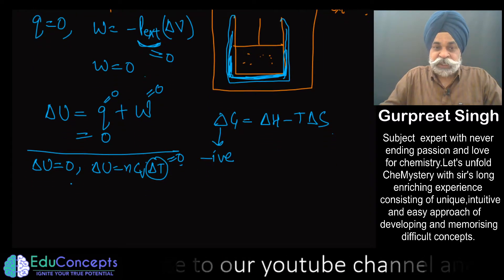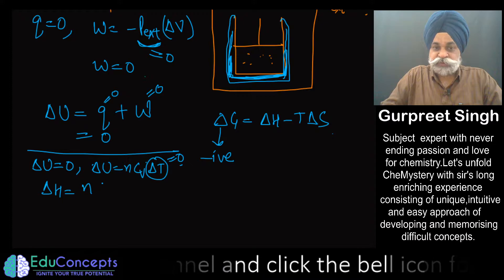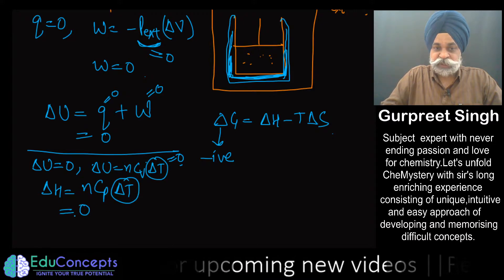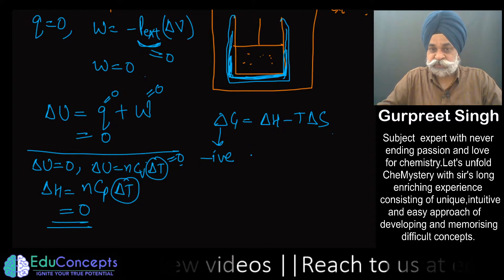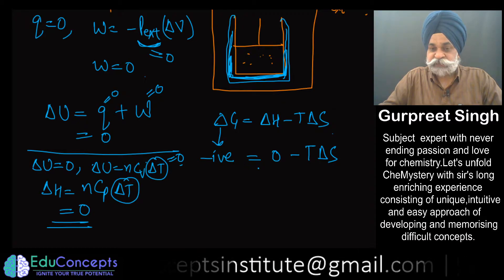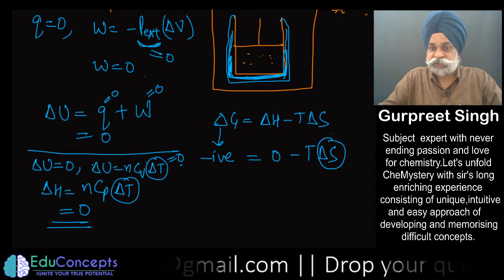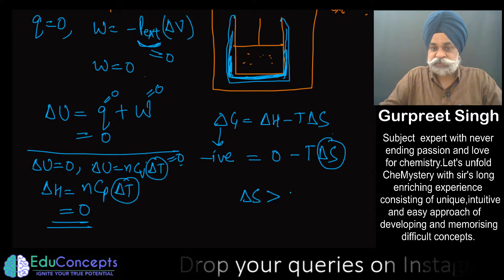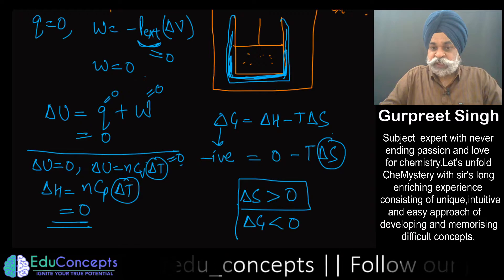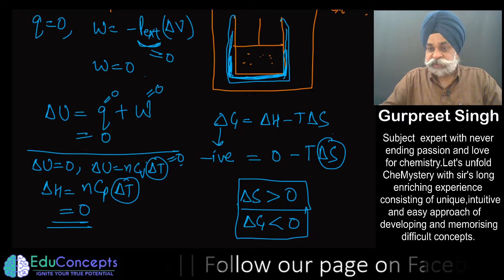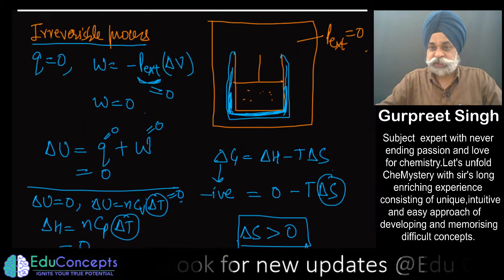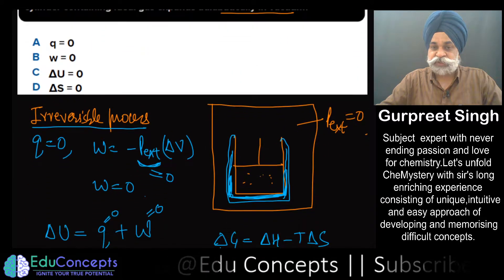Since ΔT = 0, then ΔH = nCₚΔT = 0 as well, so enthalpy for this process is also zero. We are left with the term −TΔS in the expression for ΔG. If ΔG is negative, then ΔS must be positive for this process — only then would ΔG be negative. And indeed ΔS must be positive.